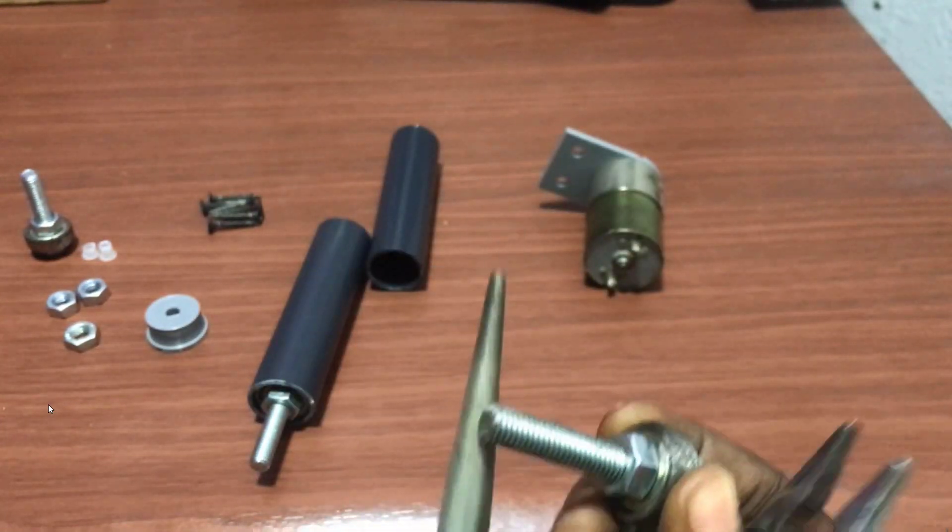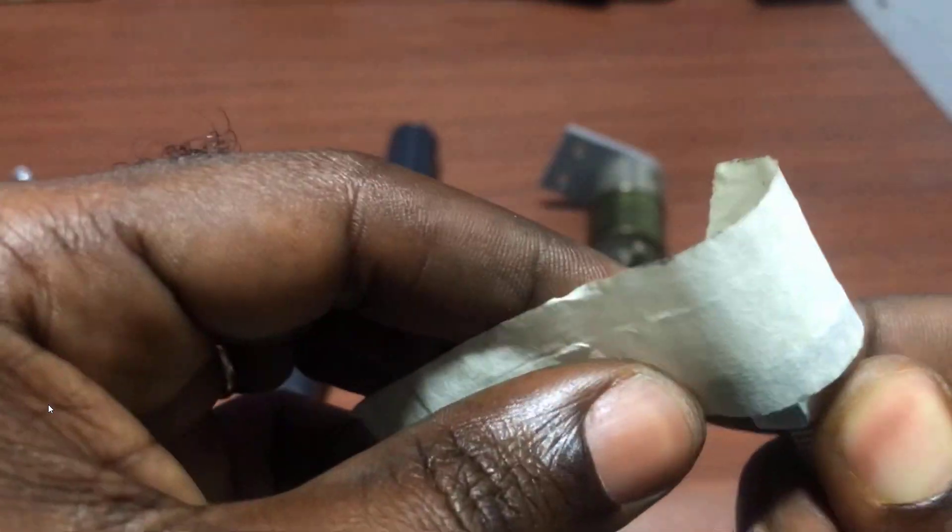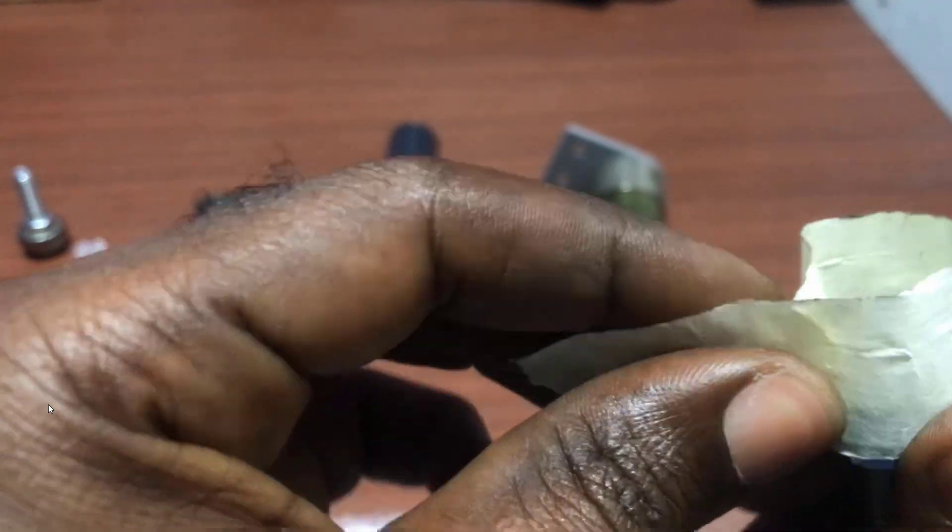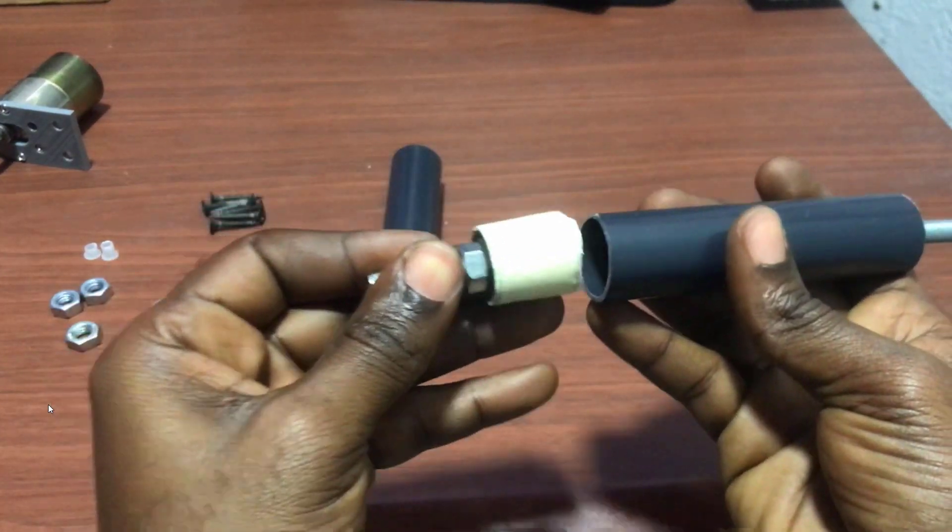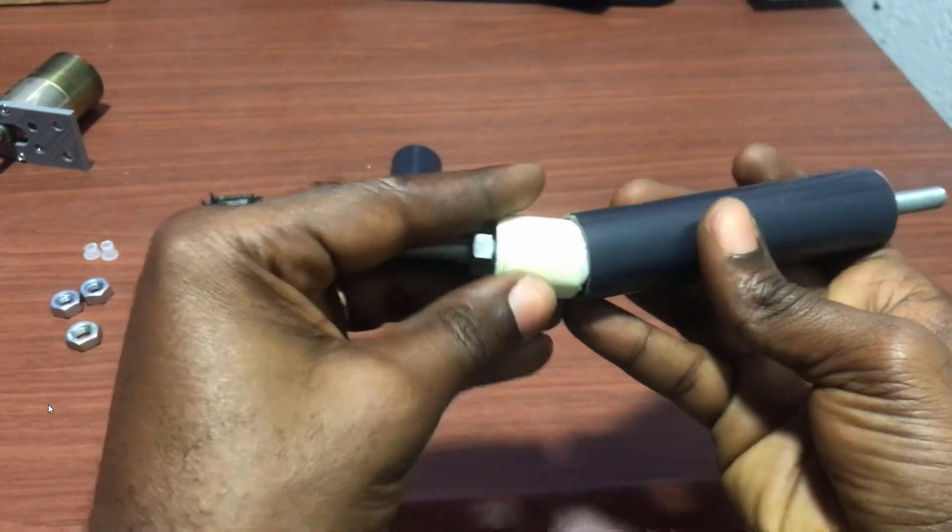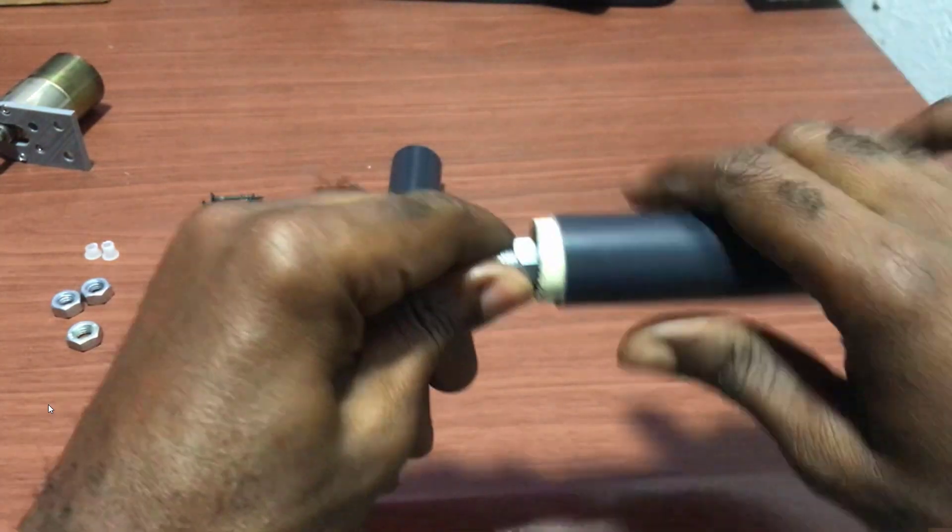We re-tighten the other nut and then apply the same masking tape. We slot it at the other end of the pipe, and this forms our first non-drive drum.